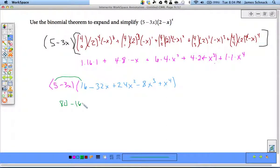That's minus 160x. 5 times 24. 5 times negative 8x cubed with my x squared on it. That's going to be minus 40x cubed and then plus 5x to the fourth.